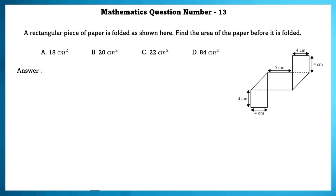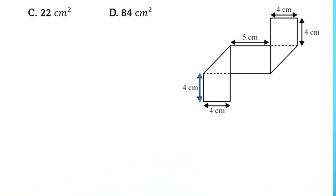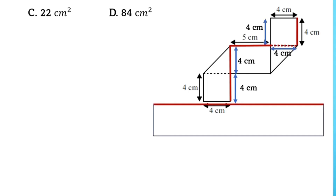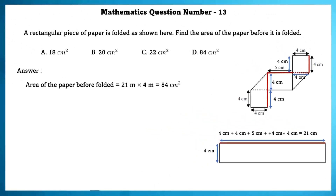Mathematics question number 13. A rectangular piece of paper is folded as shown. Find the area of the paper before it is folded. Since the length of the lower left bottom is 4 cm, the right-hand side is also 4 cm. The breadth is 4 cm, so the top part is also 4 cm. The total length is 21 cm, so the area before folding is 21 into 4 equals 84 cm square.